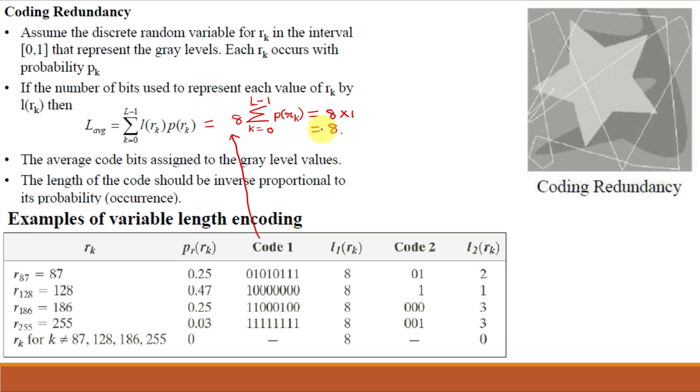So total bits required to represent an M×N image is M×N×L_avg. If the image is 256×256, total bits required will be 256×256×8. Coding redundancy tries to reduce this L_avg. Now for code 2 we will use variable length encoding. We should assign minimum bits to higher probability. The length of the code should be inversely proportional to its probability of occurrence. As 0.47 is the highest probability, we use 1 bit. As second highest is 0.25, we use 01 and 000. And for 0.03, we use 001.